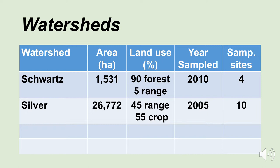We had the Schwartz watershed — 1,500 hectares, basically a forest watershed: 90% forest, 5% rangeland. It was sampled in 2010 and we had four sampling sites. We had the Silver Creek watershed down in Blaine County — 26,000 hectares, a mixed watershed: 45% rangeland, 55% cropland. It was sampled in 2005 and there were 10 specific sampling sites.